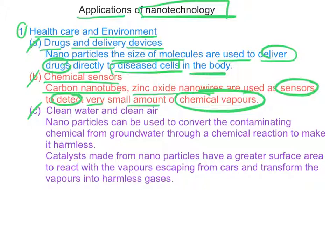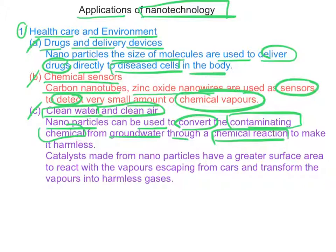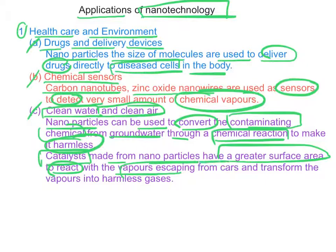Another example is to use in clean water and clean air. Nanoparticles can be used to convert the contaminating chemicals from groundwater through a chemical reaction to make it harmless. Also, catalysts made from nanoparticles have a greater surface area to react with the vapors escaping from cars and transform the vapors into harmless gases.